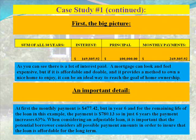Case study number one continued — the big picture. The sum of all 30 years' interest payments is $169,805.92. The sum of all 30 years' principal is, of course, $100,000. And the sum of all monthly payments is $269,805.92. As you can see, there is a lot of interest paid. A mortgage can look and feel expensive, but if it is affordable and doable and provides a method to own a nice home to enjoy, it can be an ideal way to reach the goal of home ownership.